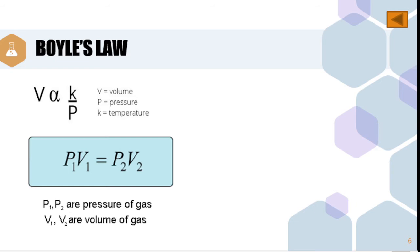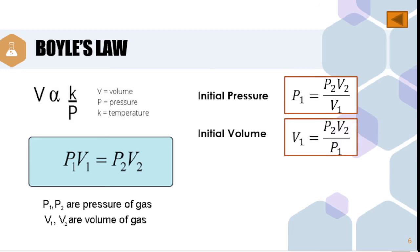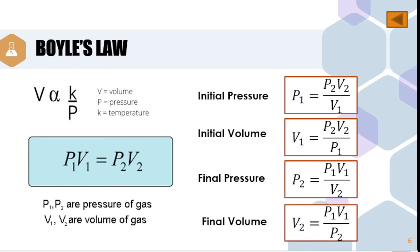Again, we have P1 multiplied by V1 is equal to P2 multiplied by V2. If the initial pressure is missing, P1 is equal to P2 multiplied by V2 divided by V1. If the initial volume is missing, the formula is V1 is equal to P2 multiplied by V2 divided by P1. If the final pressure is missing, P2 is equal to P1 multiplied by V1 divided by V2. If the final volume is missing, the formula is V2 is equal to P1 multiplied by V1 divided by P2. These are the possible formulas that we can use in order to solve word problems.